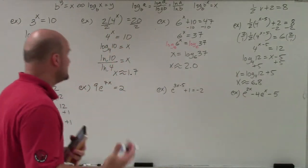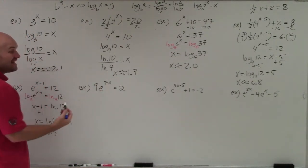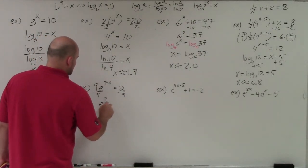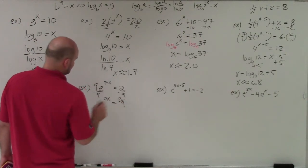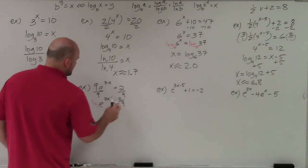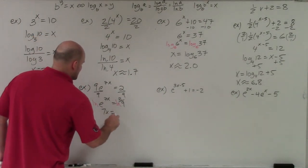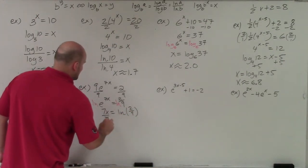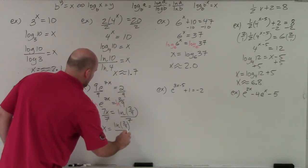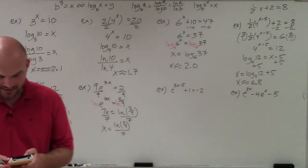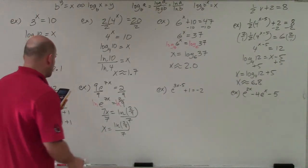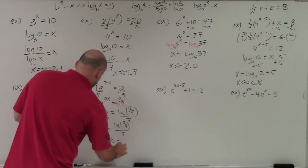We have to make sure we isolate the exponent first. Here I have e to the 7x, so the only thing I need to do is divide by 9 to get e to the 7x equals 2 ninths. Taking ln of both sides gives 7x equals ln of 2 ninths, then dividing by 7 gives x equals ln of 2 ninths divided by 7. In the calculator, I do ln of (2 divided by 9), then divide by 7, and I get approximately negative 0.2.